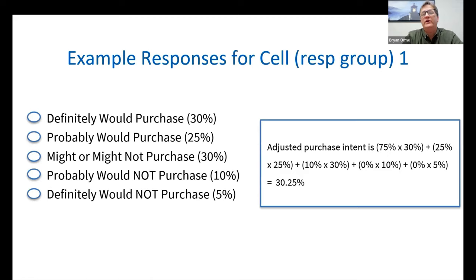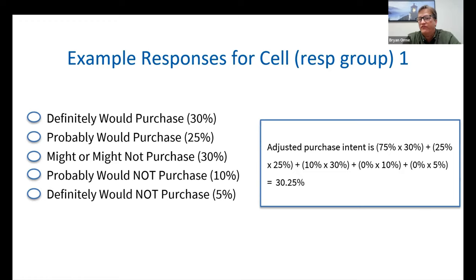Let's imagine we randomly split respondents into four different experimental cells, each group getting a different price in our questionnaire. For the first group of 400 respondents, say 30% said they definitely would purchase, 25% probably would purchase, and 30% might or might not. The adjusted purchase intent takes 75% of the top box (75% of 30%), 25% of the second box, and 10% of the third box — all added together come out to just a tiny bit over 30%. We do that for each group of respondents who saw a different price, then plot the adjusted purchase intent across the different cells.